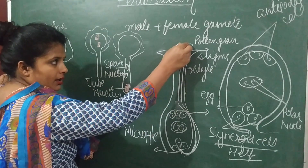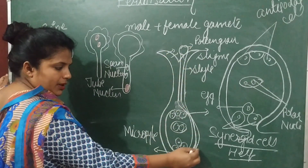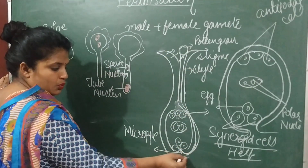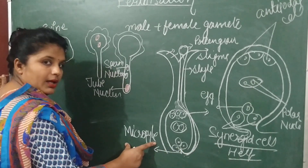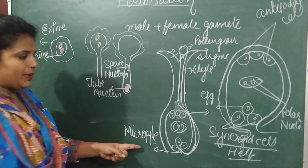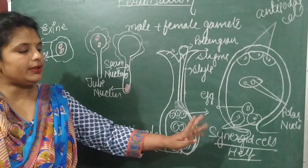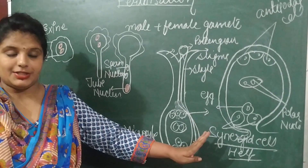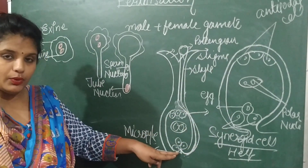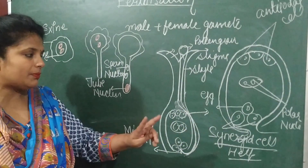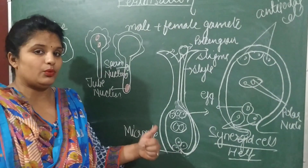Through the pollen tube, the pollen grains enter through a pore called the micropyle. There will be two fertilizations because there are two sperm nuclei, so these sperm nuclei will combine in two different ways.